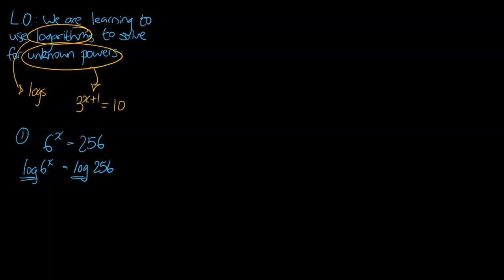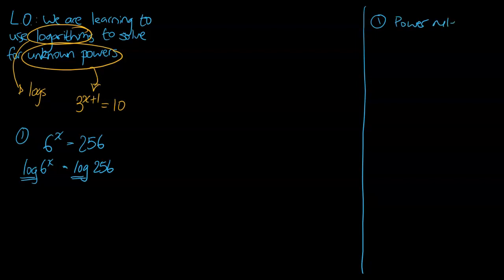The first rule I want us to learn about is the power rule. If you have log of a to the power of b, that becomes b times log a. In other words, that power moves out to the front as a multiplication.